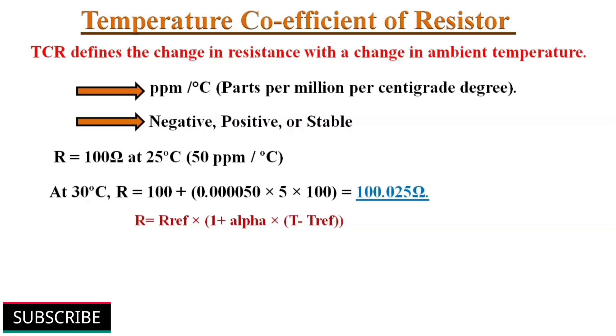If this resistor is operated at 30 degree centigrade, then the value of resistance will become 100.025 ohms. The higher the TCR value, the larger the change in resistance value when operating at higher temperature. So we must use a resistor with lower TCR value for precision applications.